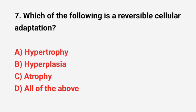Question number 7: Which of the following is a reversible cellular adaptation? The right answer is option D: All of the above.